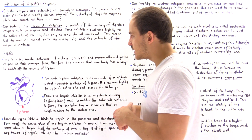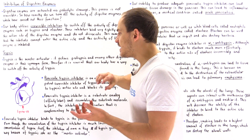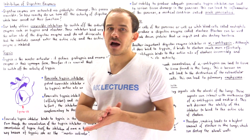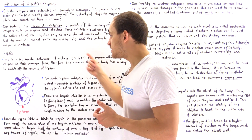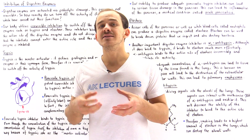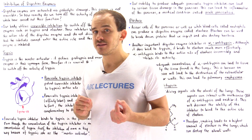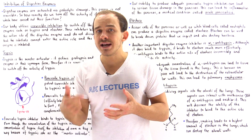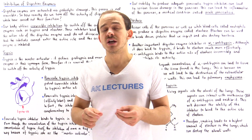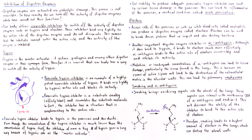What happens if the pancreatic trypsin inhibitor is mutated or produced in inadequate amounts? Without enough inhibitor, trypsin will be overproduced and too many active trypsin molecules will exist inside the pancreas. These active trypsin molecules will begin breaking down the extracellular proteins surrounding cells in the pancreas, causing tissue destruction — a medical condition known as acute pancreatitis.